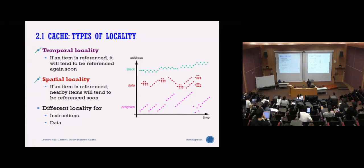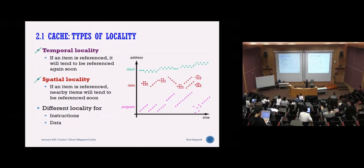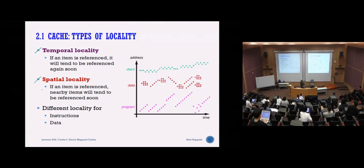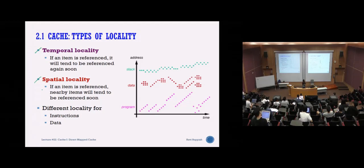Temporal locality relates to time — if I access something now, there's a high chance I will access this data again within a short time frame. This applies in areas with loops or arrays. Spatial locality relates to space — if I have an array and access one element, chances are I may access nearby elements also. If I access a piece of code, there is a high chance I may repeatedly access that code again and again. Same thing for data.